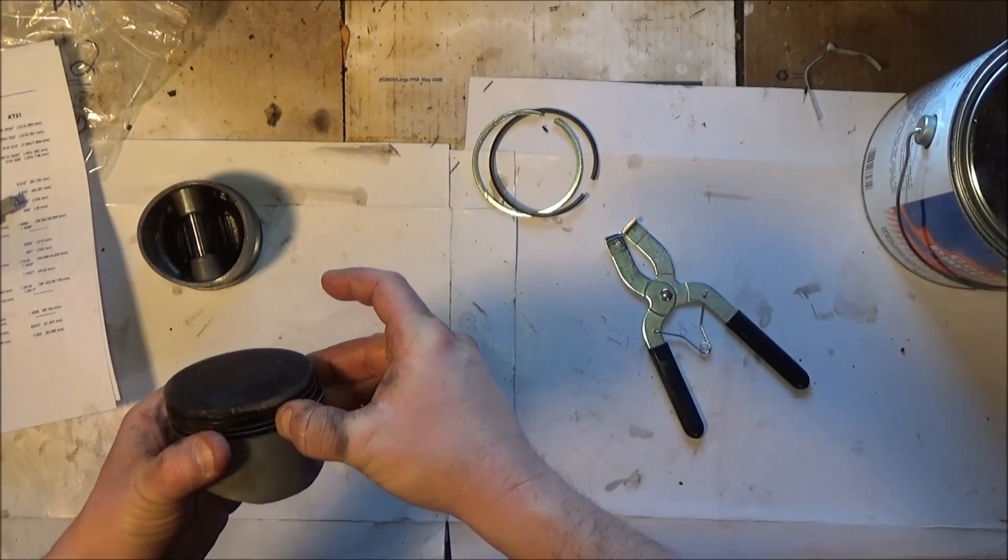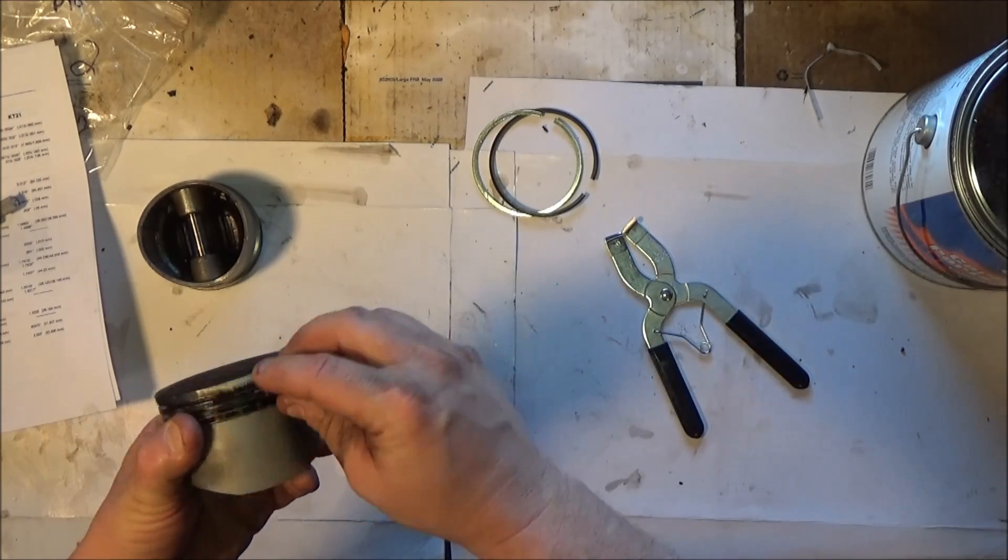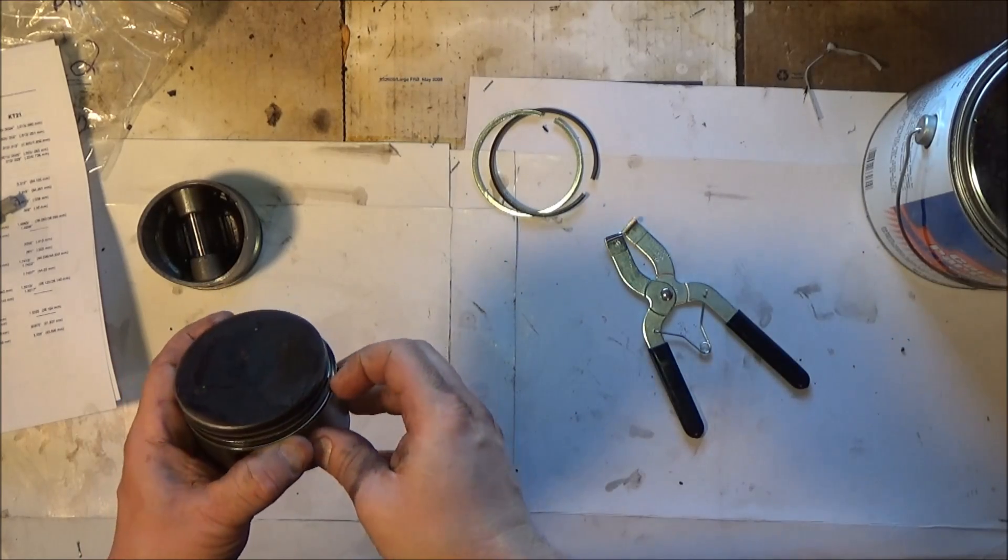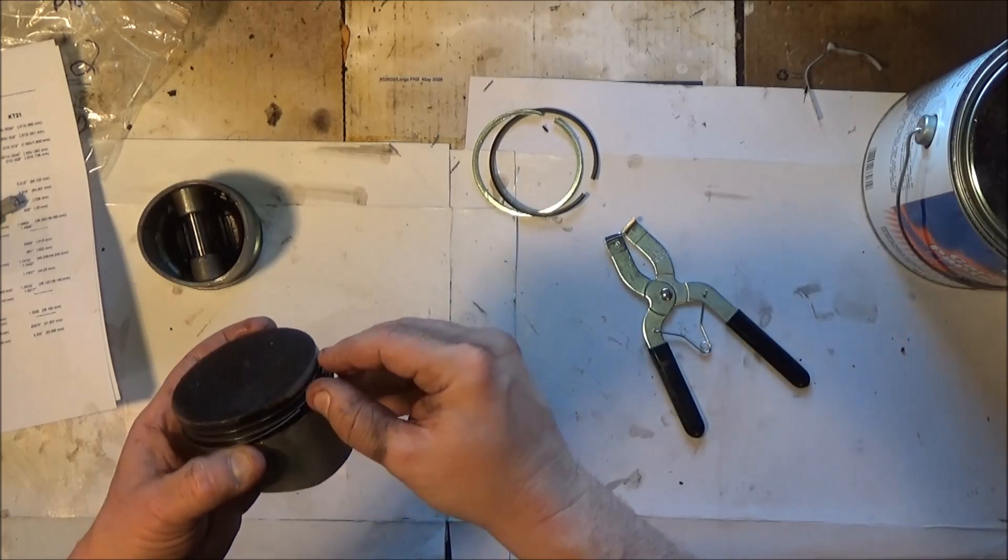Let's get the second ring off. And the oil ring usually is in a few pieces, so what you don't want to do is scratch the piston up here.